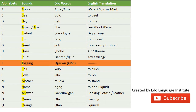We have 'FANNO' which means to unravel; it can also mean to open, if we are talking about a person. For the G sound, we have 'GO' which means to scream or to shout.